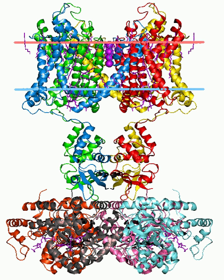Voltage-gated ion channels can be observed throughout the nervous system in neurons. The first ion channels to be characterized were the sodium and potassium ion channels by A. L. Hodgkin and A. F. Huxley in the 1950s upon studying the giant axon of the squid genus Loligo. Their research demonstrated the selective permeability of cellular membranes, dependent on physiological conditions, and the electrical effects that result from these permeabilities to produce action potentials.